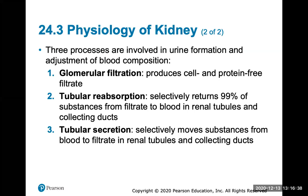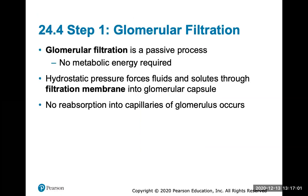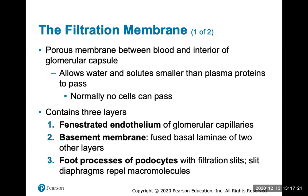Glomerular filtration occurs in the glomerulus; tubular reabsorption is everything taken out of the filtrate back into the blood capillaries; and tubular secretion is when substances are taken from the blood and put back into the filtrate to form urine. Glomerular filtration is a passive process — no energy or ATP is required. It forces fluids and solutes through the filtration membrane due to hydrostatic pressure, and no reabsorption into the capillaries of the glomerulus occurs at this point.